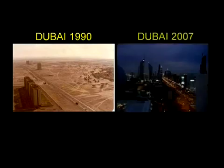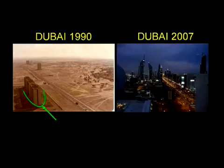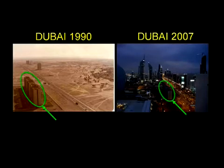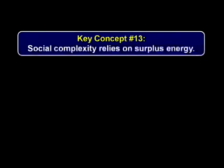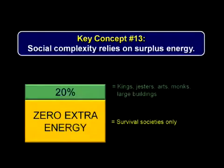With sufficient surplus energy, humans can construct remarkably complex creations in short order, as these pictures of oil-rich Dubai taken only 17 years apart attest. We can now state the 13th key concept of the Crash Course: social complexity relies on surplus energy.